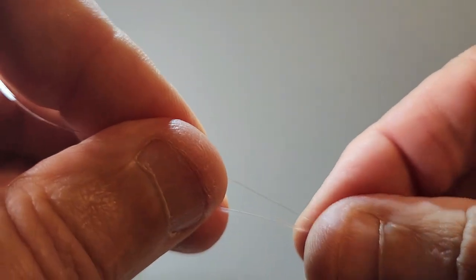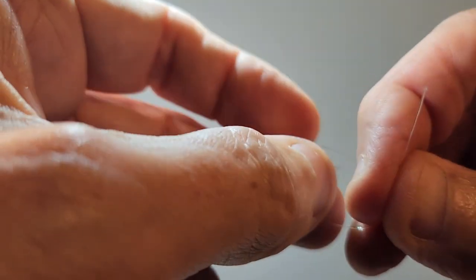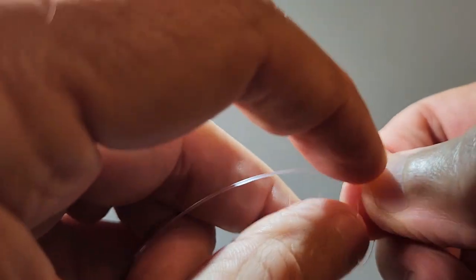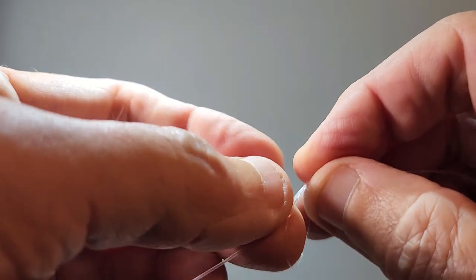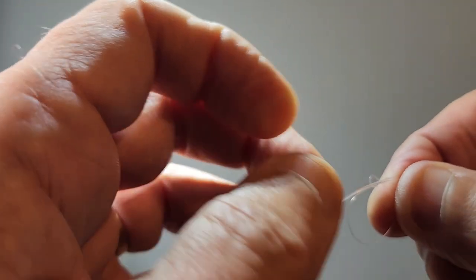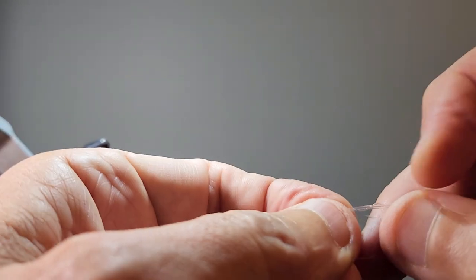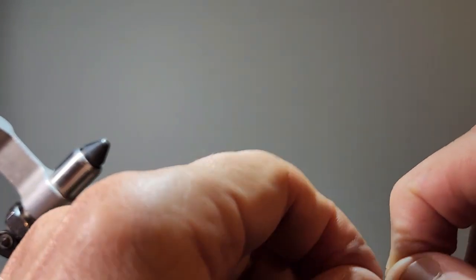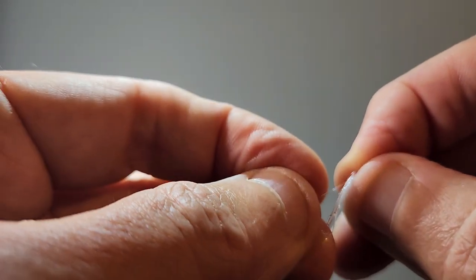Then I'm going to take that, going to make a loop just like we did before, except this time, instead of just doing two turns, I'm going to do five. One, two, three, four, five.